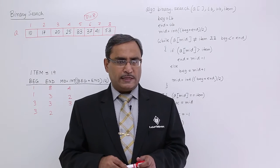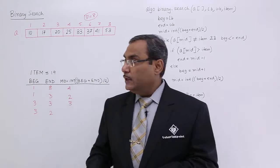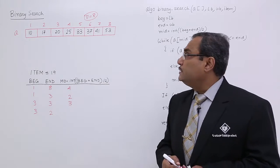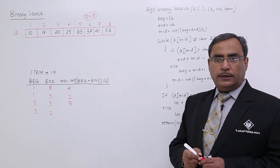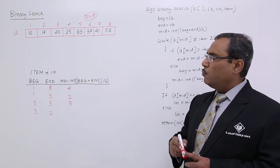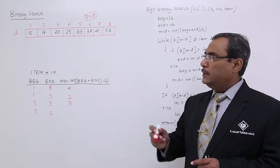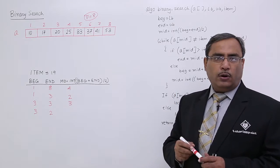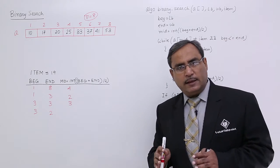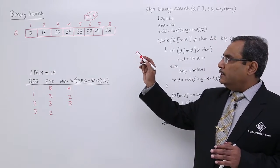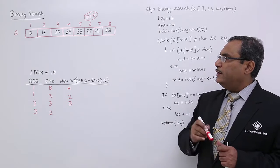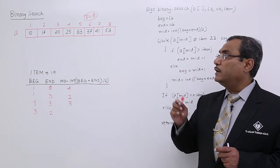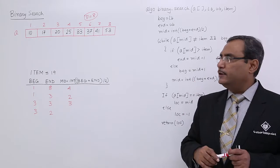Let me go for a proper explanation. Here you see there is one array A which is having 8 number of data and the subscripts are ranging from 1 to 8. Look at the array content — all the data have been arranged in ascending order: 10, 17, 20, 25, 33, 37, 41, and 53.